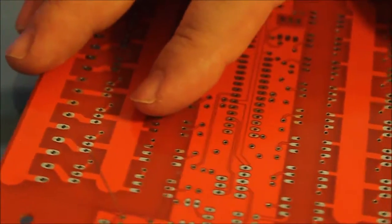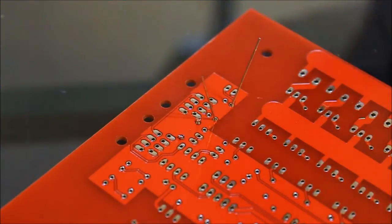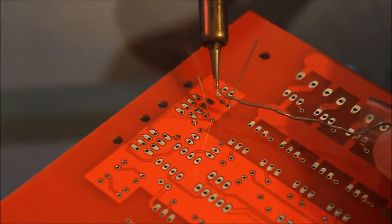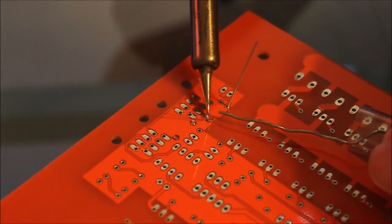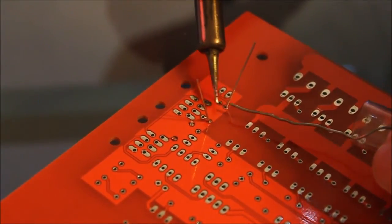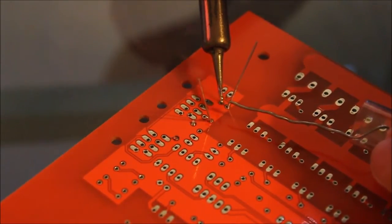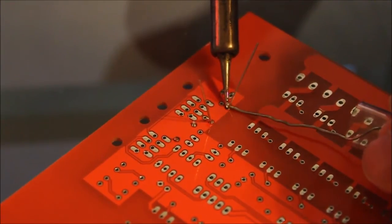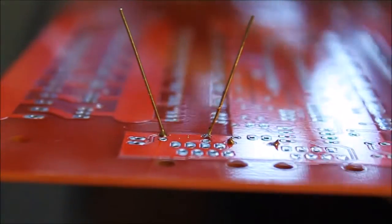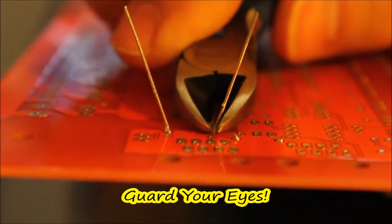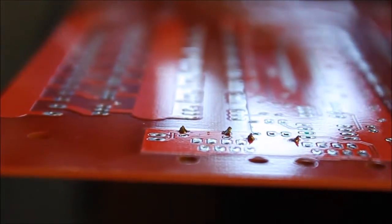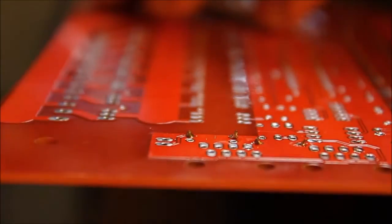We're going to solder these two leads in. A little bit of solder on the tip. Solder in the joint. Touching both the pad and the wire. Feed a little solder in and let go. Touch the joint and the wire. Feed the solder in from the back side and release. Now with a pair of snips, one and two. And now we've got two resistors in and we'll continue the remaining ones.